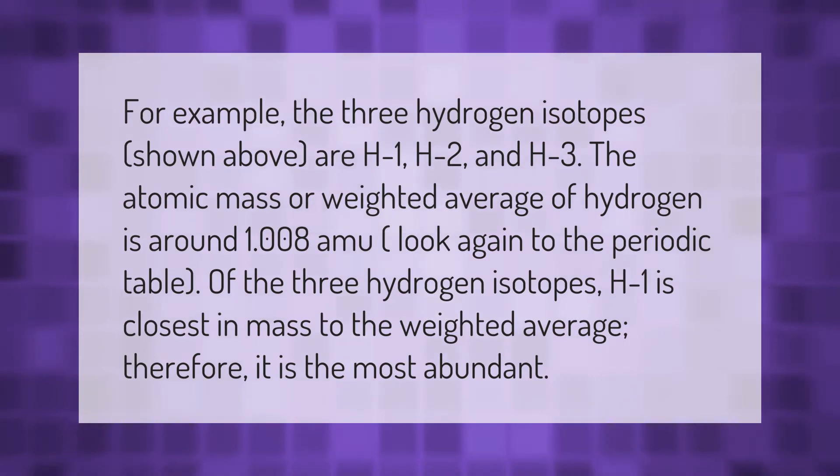For example, the three hydrogen isotopes shown above are H-1, H-2, and H-3. The atomic mass or weighted average of hydrogen is around 1.008 amu (look again to the periodic table). Of the three hydrogen isotopes, H-1 is closest in mass to the weighted average; therefore, it is the most abundant.